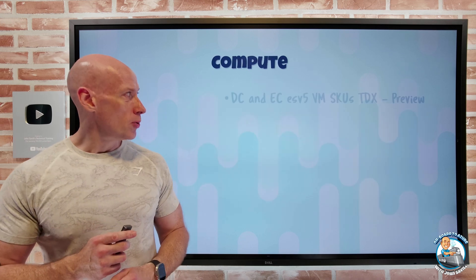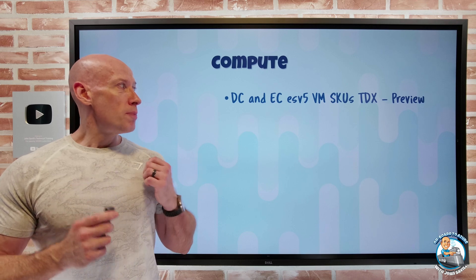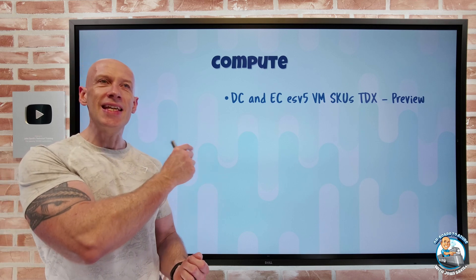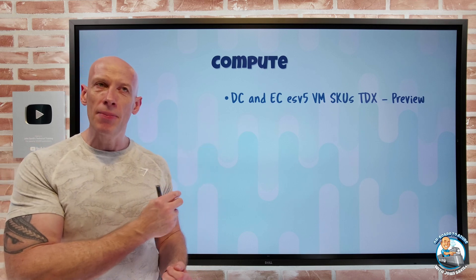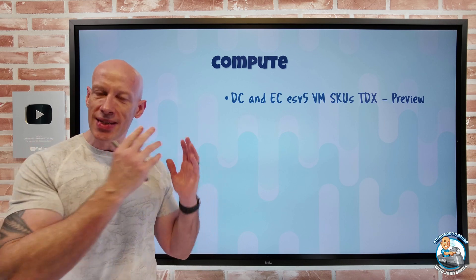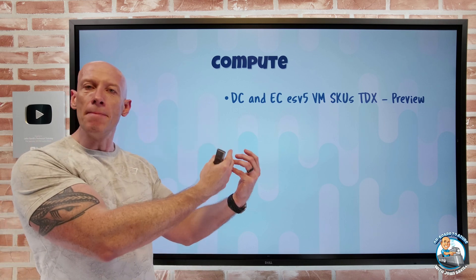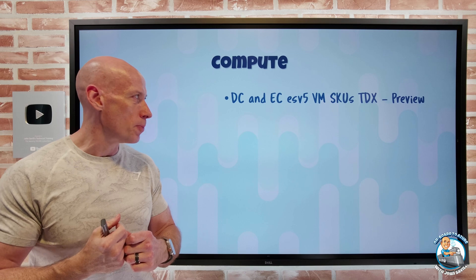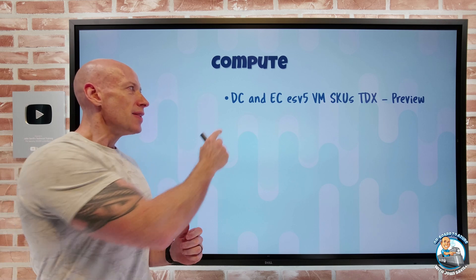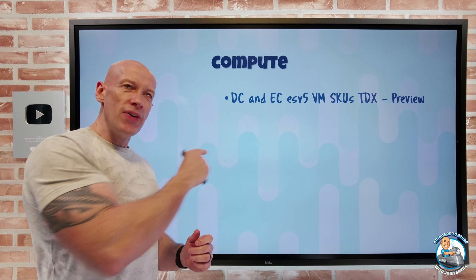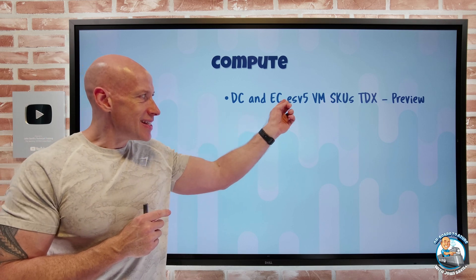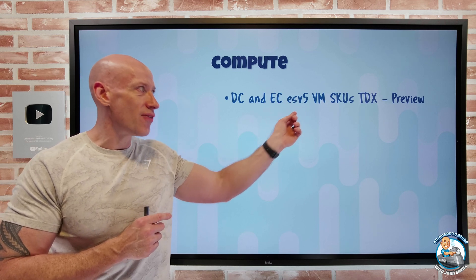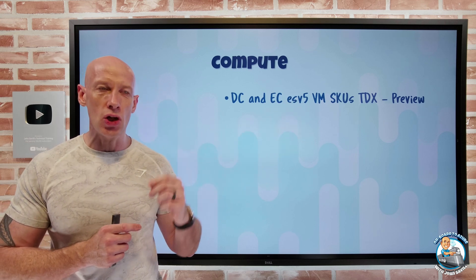So on to what's new. On the compute side, we have new DC and EC VM SKUs. The D is general purpose, E is memory-centric with a bigger memory-to-CPU ratio, and C is confidential. We now have these ESV5 VM SKUs.